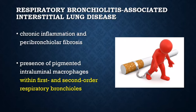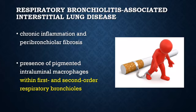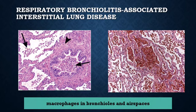Respiratory bronchiolitis-associated interstitial lung disease is marked by chronic inflammation and peribronchiolar fibrosis. It is a common histologic lesion in cigarette smokers, characterized by the presence of pigmented intraluminal macrophages within first and second order respiratory bronchioles. In its mildest forms, it is most often an incidental finding in the lungs of smokers or ex-smokers, and cessation of smoking usually results in improvement. Histologically, respiratory bronchioles, alveolar ducts, and peribronchiolar spaces contain aggregates of dusty brown macrophages similar to those seen in desquamative interstitial pneumonia. Centrilobular emphysema is common but not severe, and desquamative interstitial pneumonia is often found in different parts of the same lung.